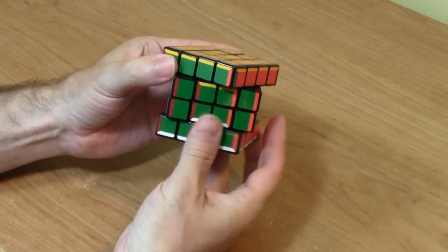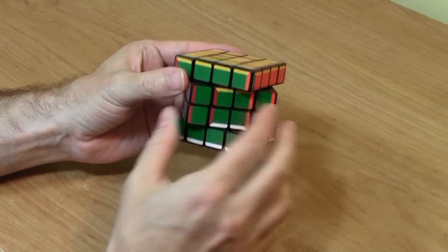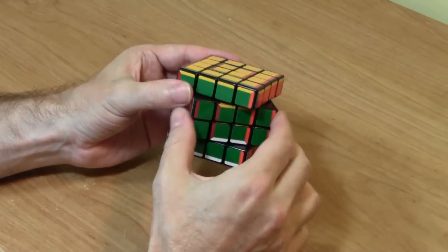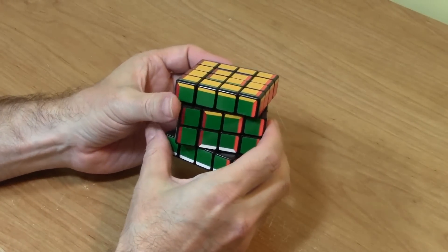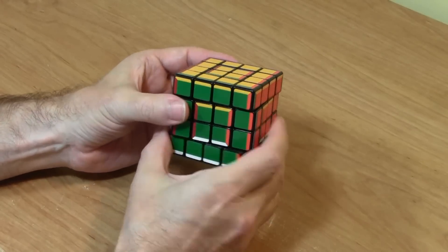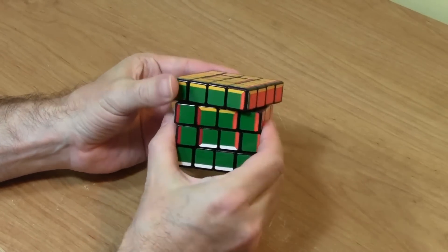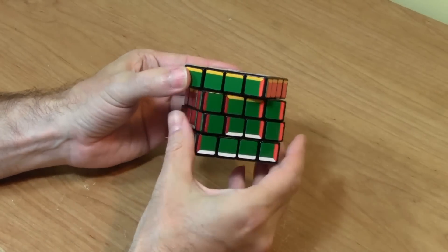And it also uses an E move, which is the middle two layers that go around the equator of the puzzle. E for equator. And E goes in the same direction as D. So an E then goes this way.